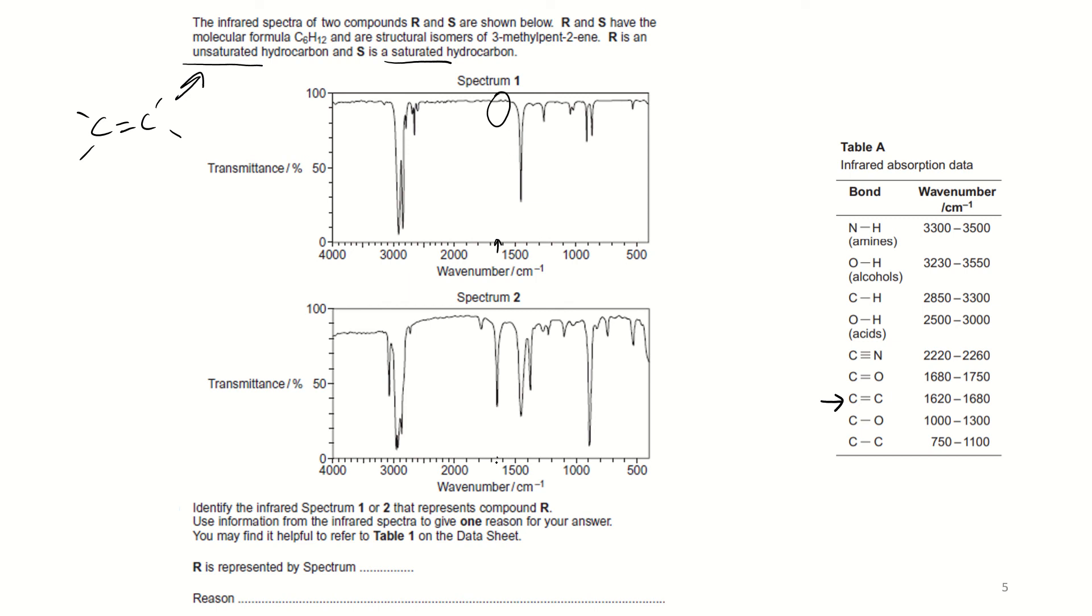17, look up. And we can see we've got the alkene. So R is represented by spectrum 2. Reason: peak at 1620 to 1680 is carbon-carbon double bond.